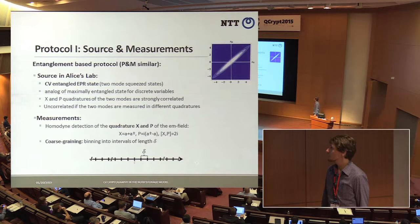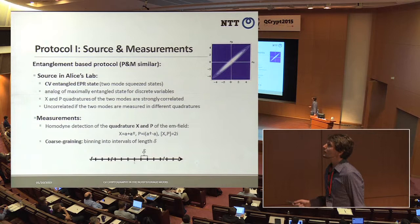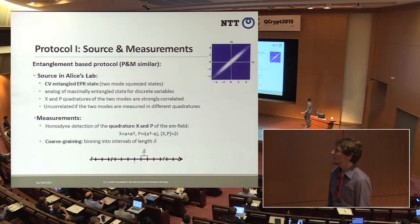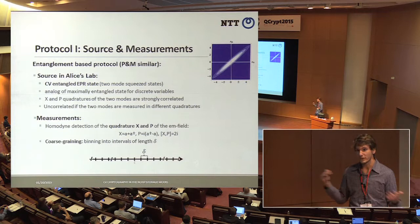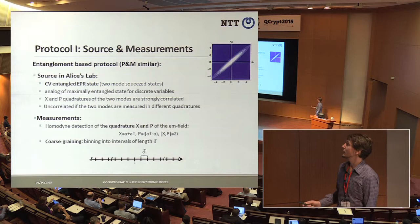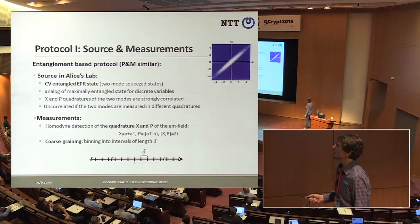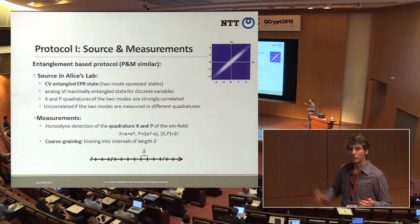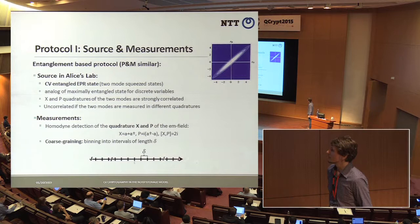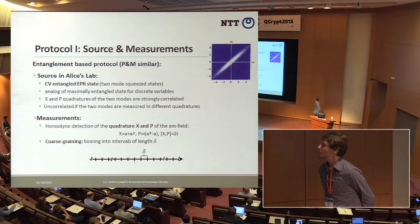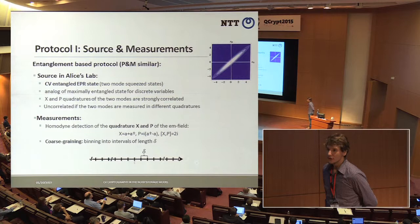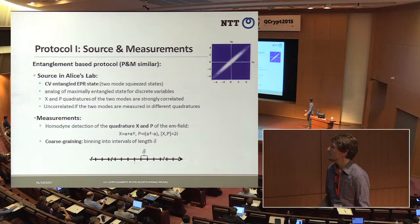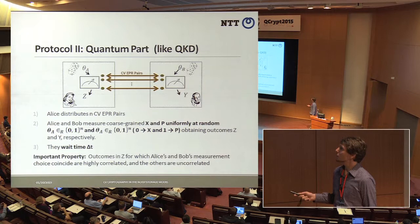We look at the entanglement-based version, though you can also do this in a prepare-and-measure protocol — it's exactly similar. The tools needed are continuous variable entangled states, which I'll call EPR states — the continuous variable analogue of a maximally entangled state in the discrete variable world. This means we have quadratures that are strongly correlated: X and P are both strongly correlated, but if you measure one mode in X and the other mode in P, they are completely uncorrelated. The measurements we use are homodyne detection — quadrature measurements of X and P — and we assume a discretized outcome with bin size delta.